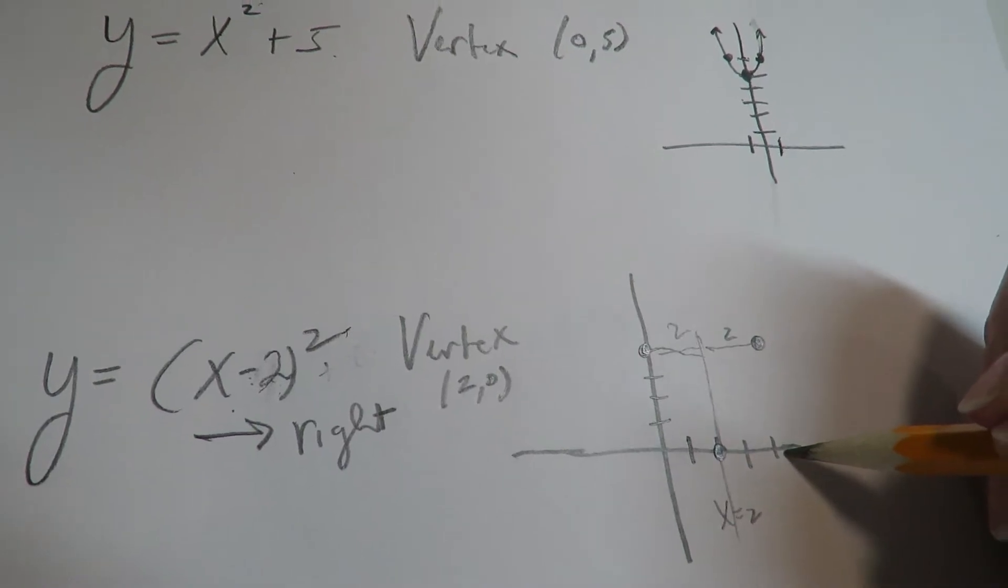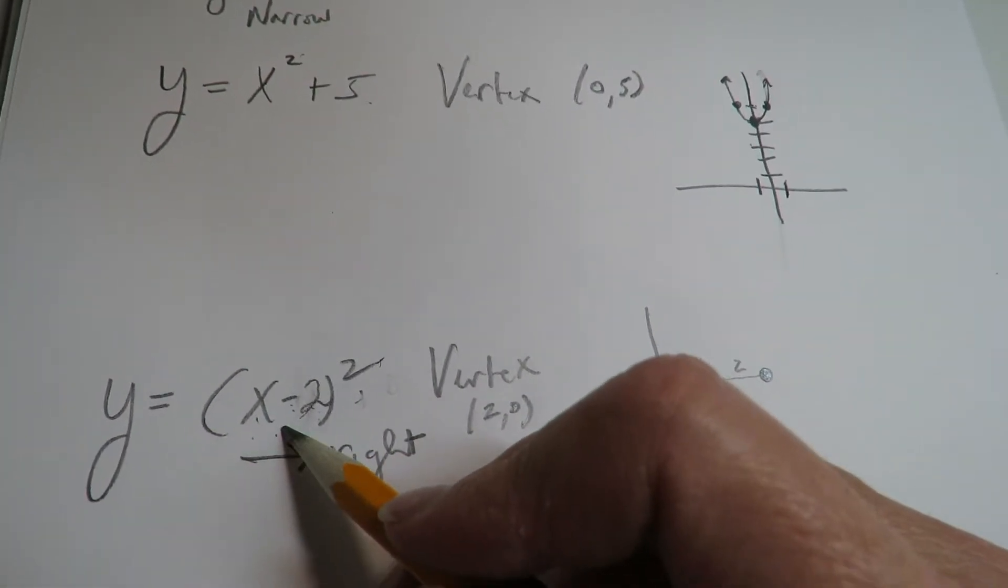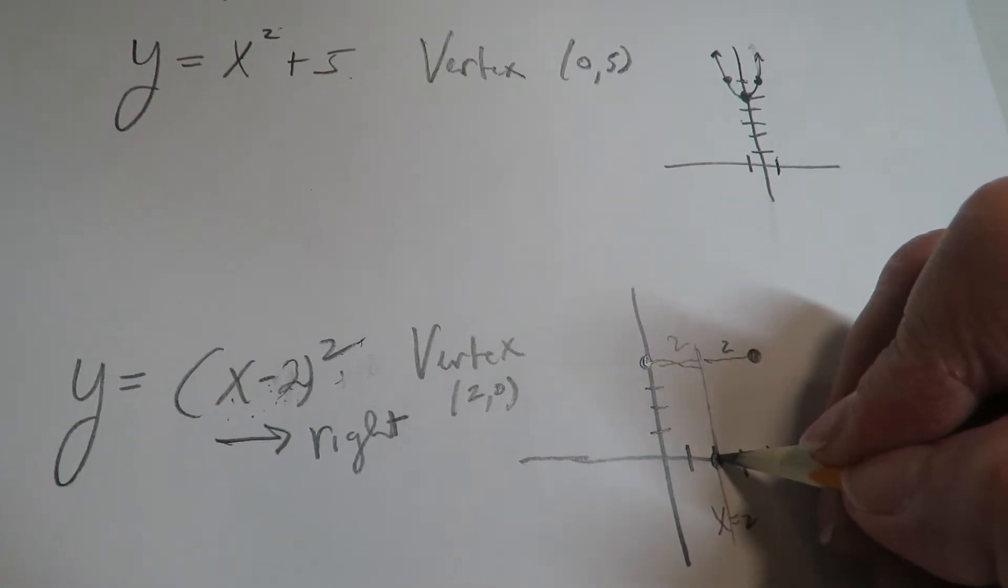if I'm at 4, so if I put in 4, 4 minus 2 is 2, 2 squared is 4, so if I'm at 4, 4.